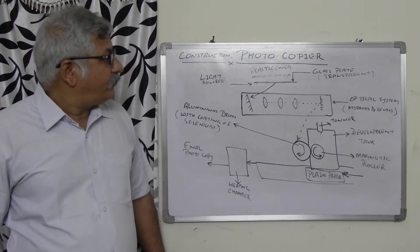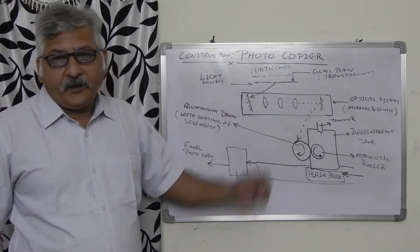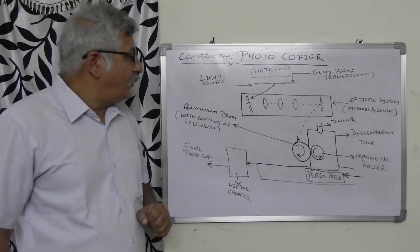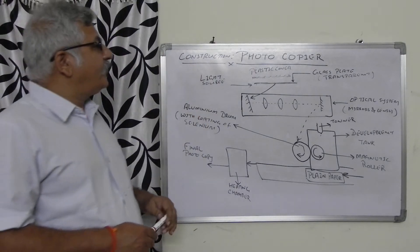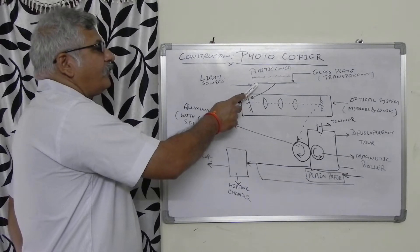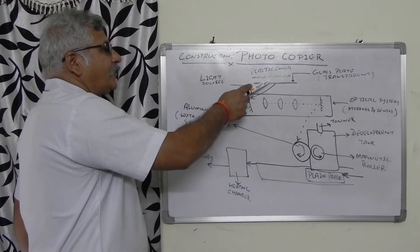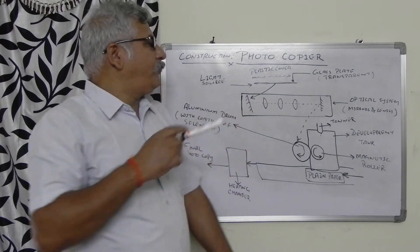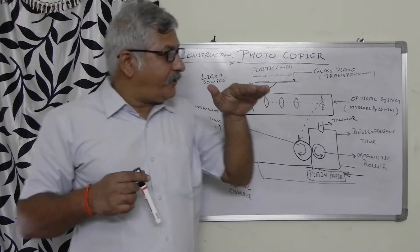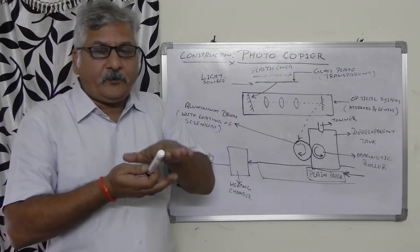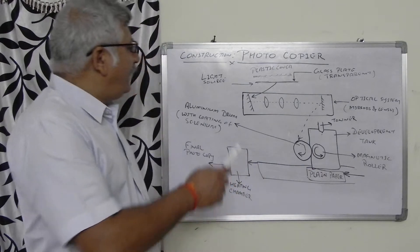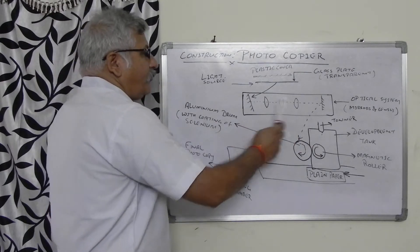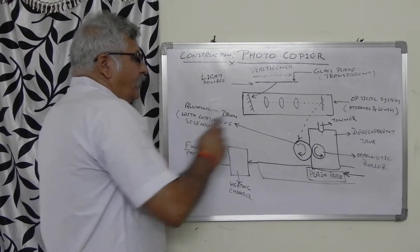In the last lecture we discussed about the photocopier, its working principle, and then we discussed about the construction. There is one transparent glass plate, over which we have to keep the paper whose photocopy we want to take. We have to place the paper so that the printed portion is in contact with the glass plate. Then there is the optical system, which consists of a few mirrors and lenses.